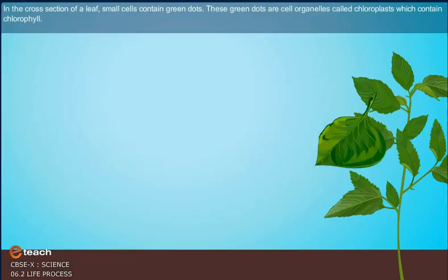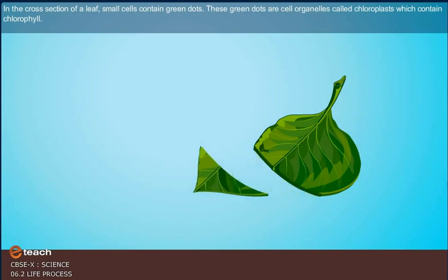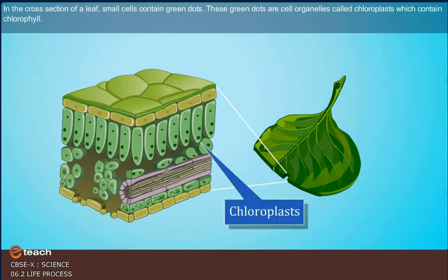In a cross section of a leaf, small cells contain green dots. These green dots are cell organelles called chloroplasts which contain chlorophyll.